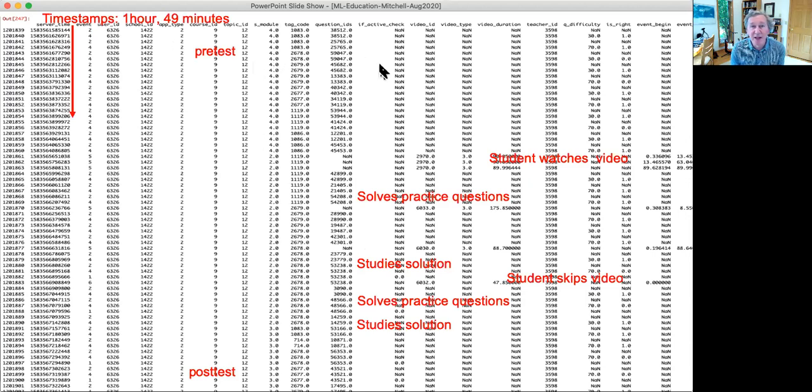Each line here is a particular event that occurred during a one and a half hour, roughly, learning session, where a student was trying to learn a particular elementary math concept. They started out by a pre-test where they were asked some test questions to assess what they knew going in. Then they were provided some videos to watch. They were given some practice questions to answer. Some more videos. They could study the solution if they liked of the questions that they answered correctly or incorrectly. They could skip videos if they didn't want to do them. And then at the end, there's a post-test to determine how much the student had learned.